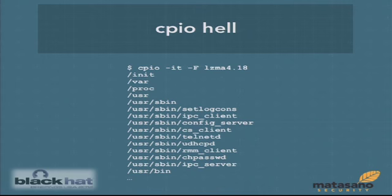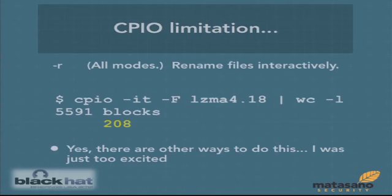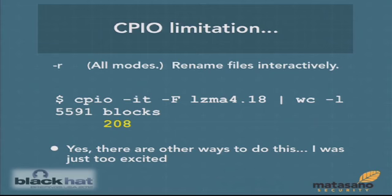Running CPIO, I could see a list of files. However, CPIO has a limitation: extracted files go to their exact path on your system — there's no way to specify a root directory. There's no way of giving it a reference directory. It just places files at their exact locations, like /etc/passwd goes to /etc/passwd on your machine. There was a flag called dash-R that allowed me to interactively rename all 208 files — which I did manually.